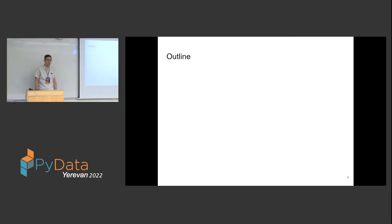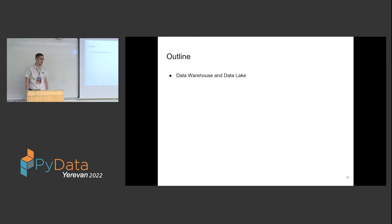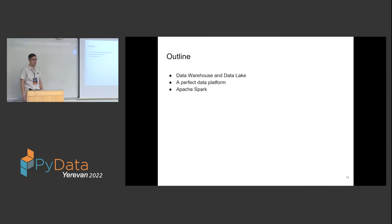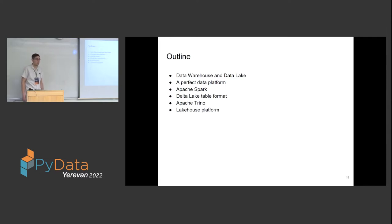Here's a brief overview of what I'm going to talk about today. First, I want to introduce the concepts of data warehouse and data lake. Then I want to show their limitations and what a perfect data platform could look like. Then I will talk about three frameworks — Apache Spark, a data lake table format, and Apache Trino — and in the end I will present the lakehouse platform and how I can see it could be built.